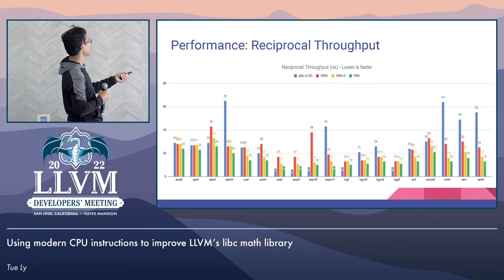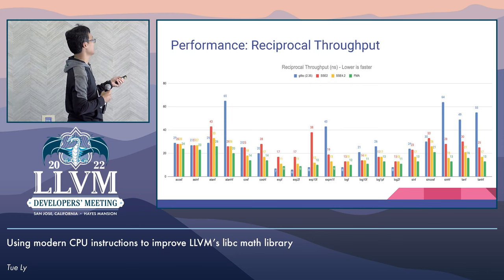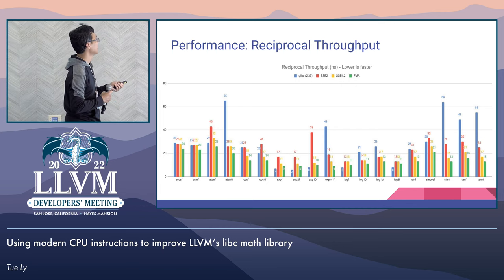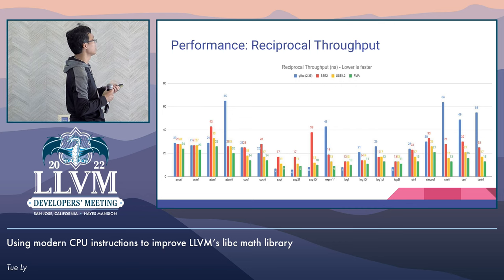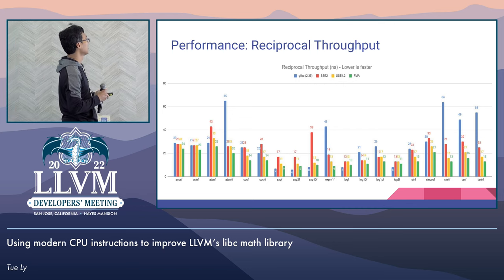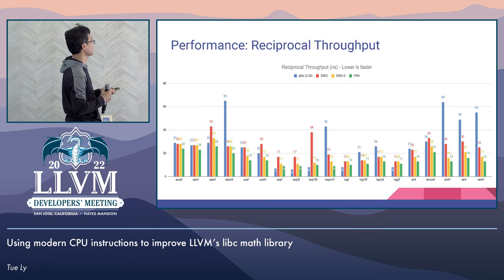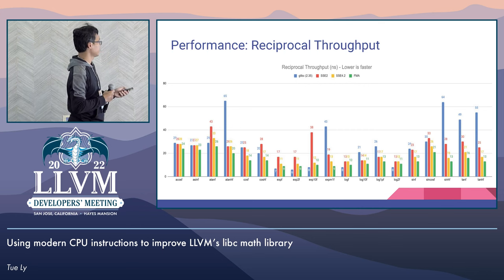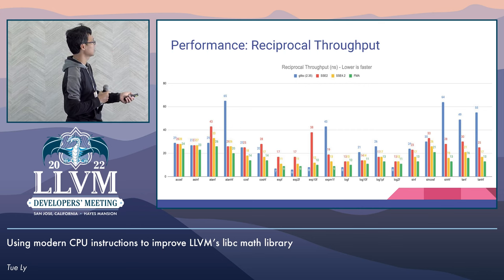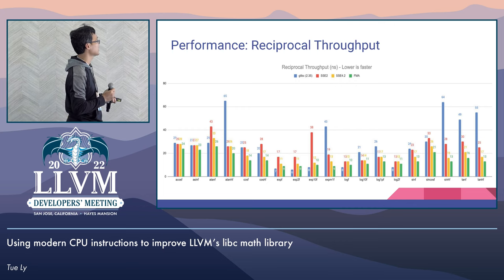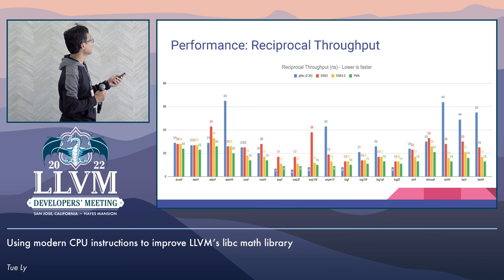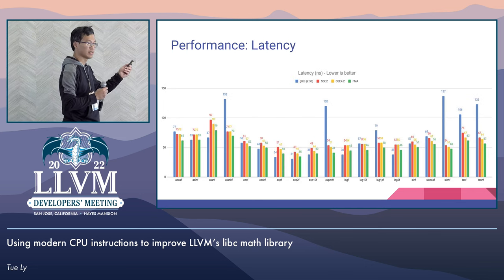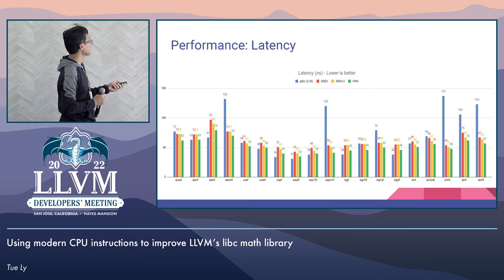Here's a plot of the reciprocal throughput. The blue color shows how long GCC takes to perform each operation. The red one is our default SSE2. The yellow color is when rounding instructions are available, and green is when FMA is also included. You can see a clear downward trend from red to yellow to green. For GCC, some implementations are not optimized, hence those giant spikes. For us, we only have one outlier which I will explain. The latency plot shows a similar trend, though the effect on latency is not as pronounced as on throughput.